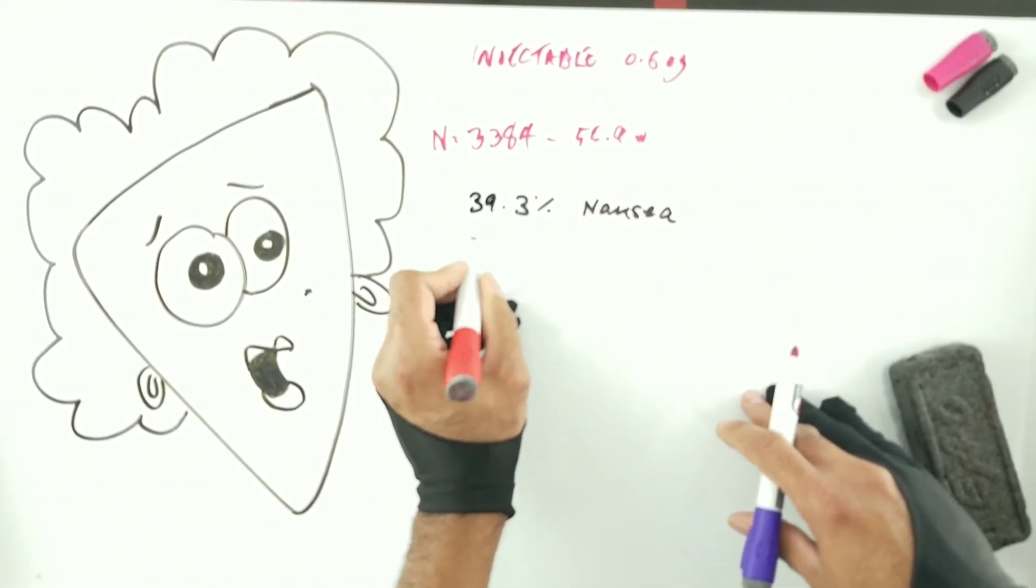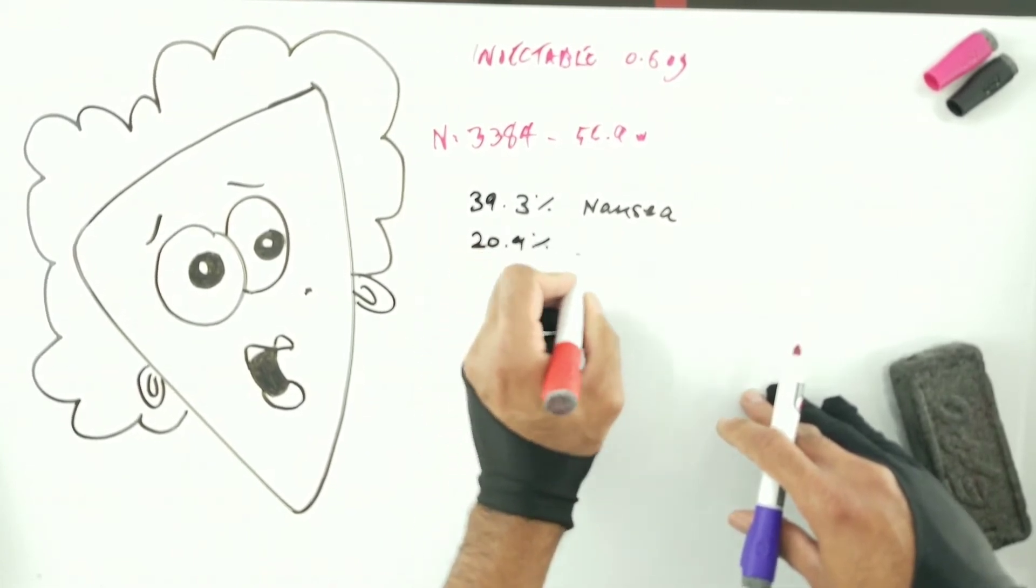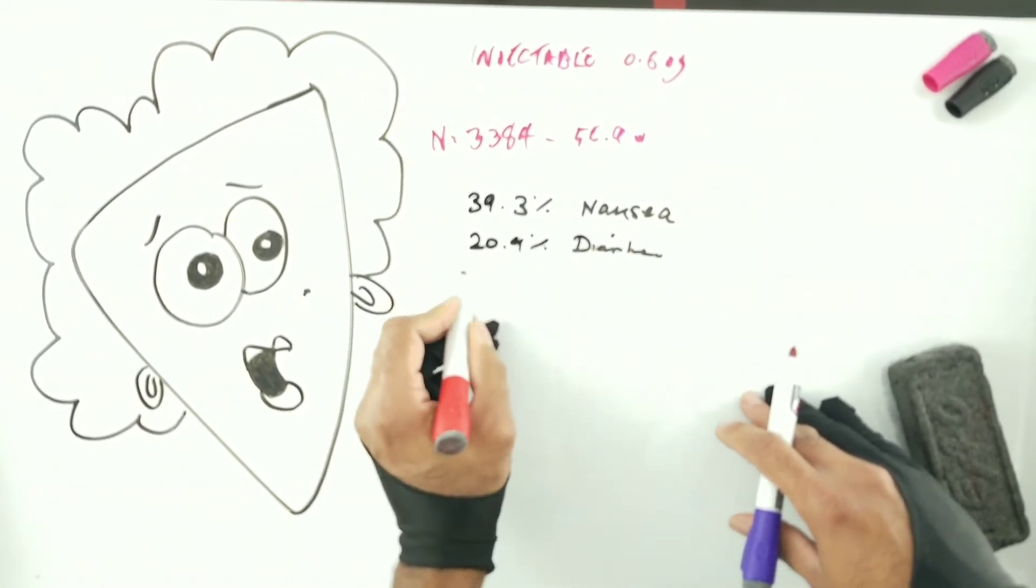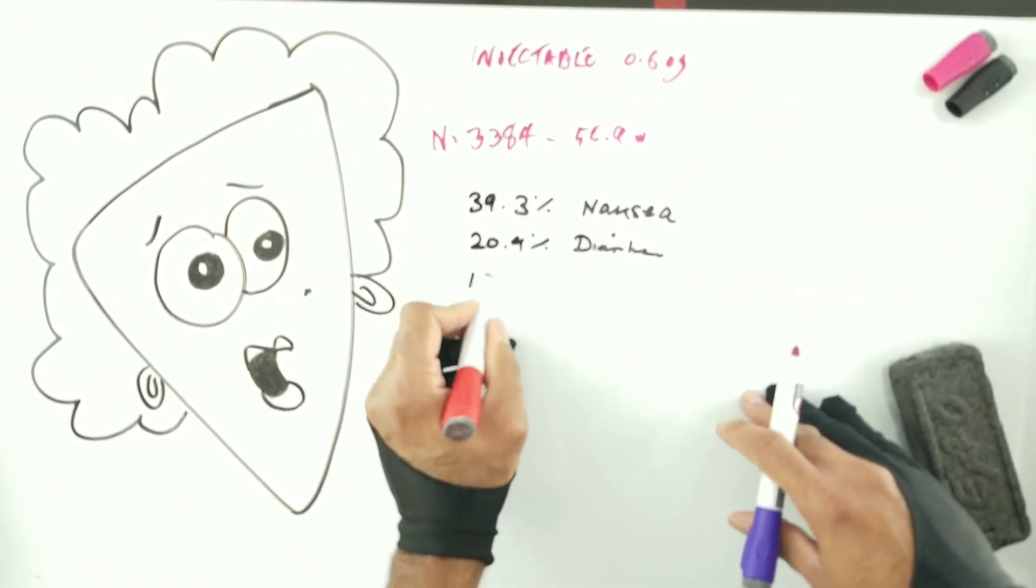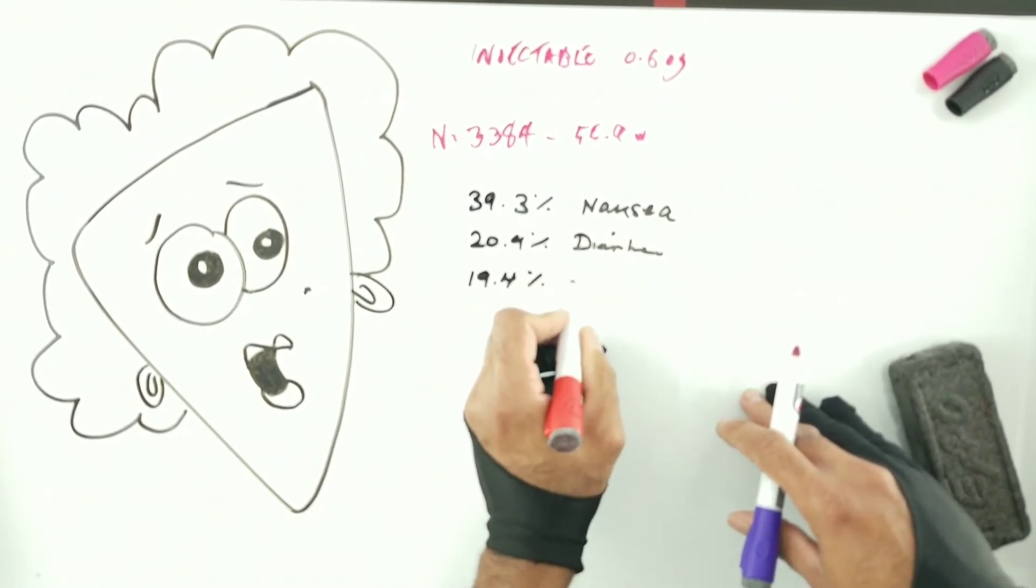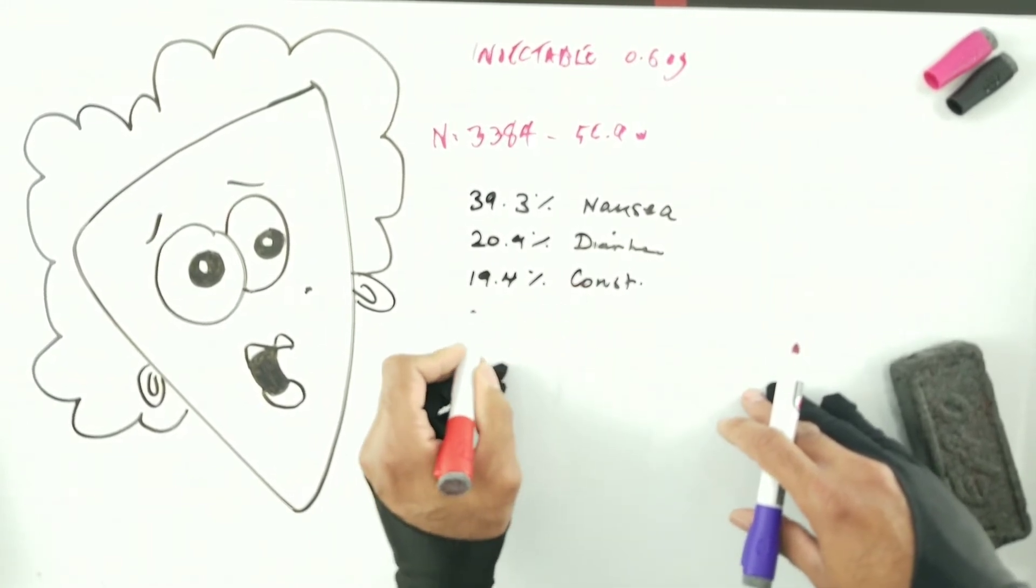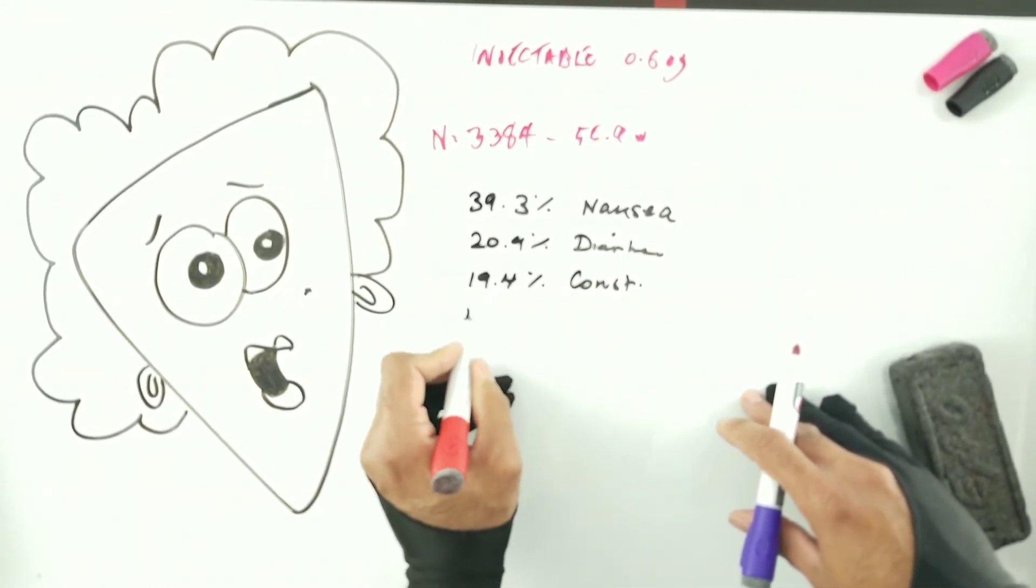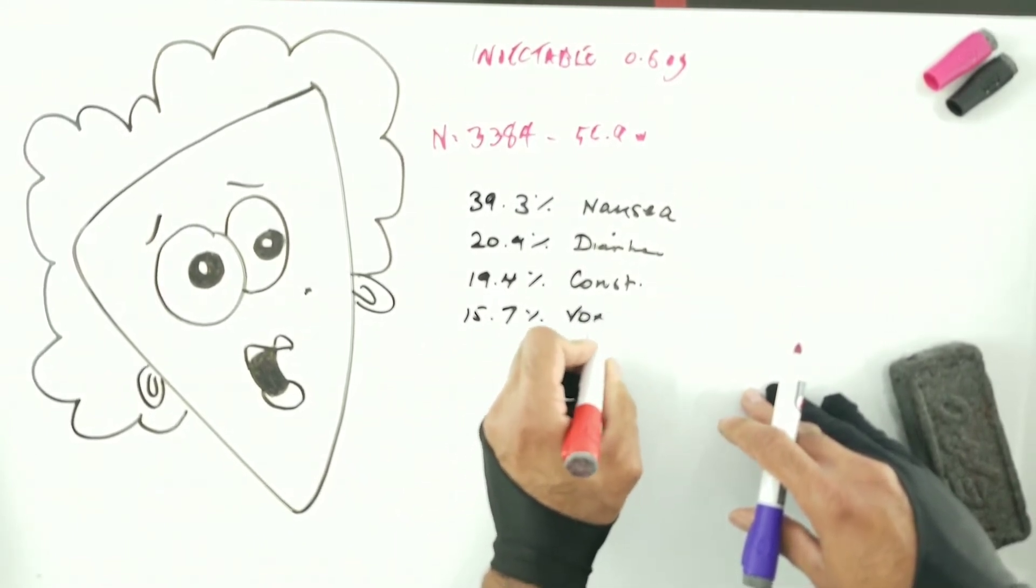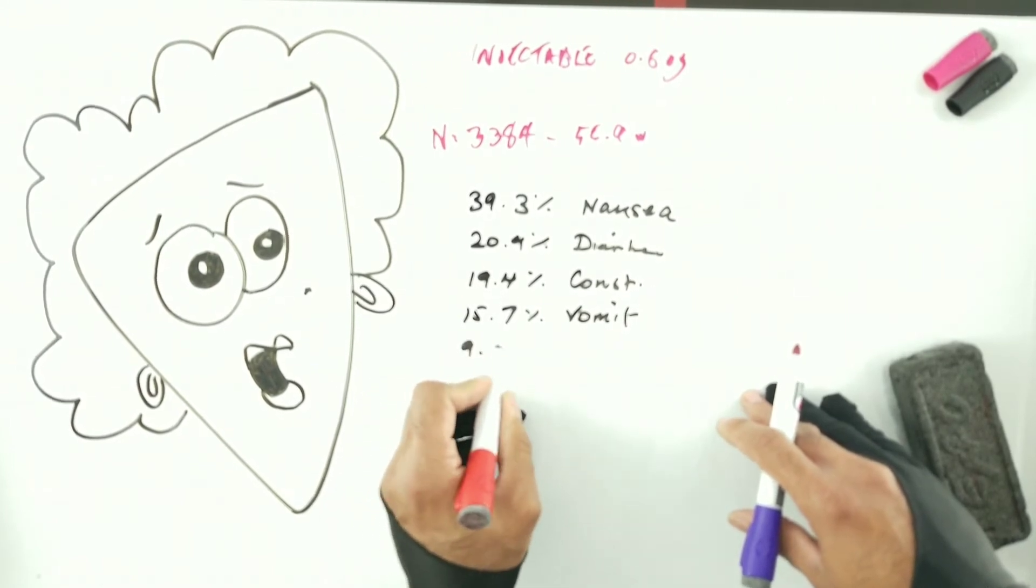Next on the list, one in five people or 20.9% complained of diarrhea. 19.4%, so roughly one in five again, complain of constipation. Then 15.7% complained of vomiting, and a further 9.6% complained of indigestion or what we call dyspepsia.